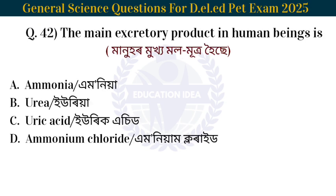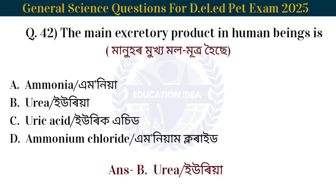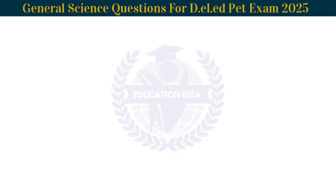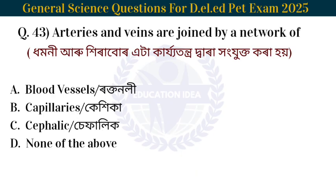Next question: The main excretory product in a human being is? The main excretory product in a human being is urea.